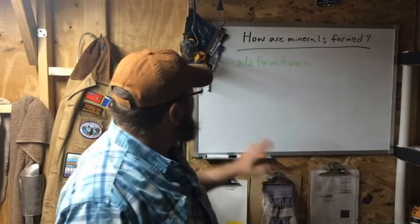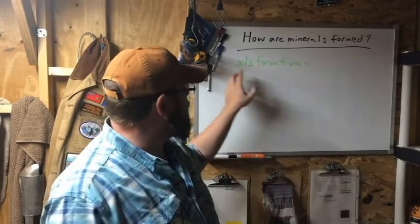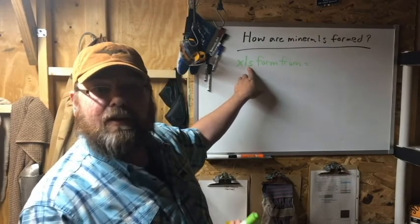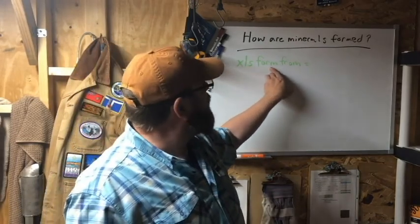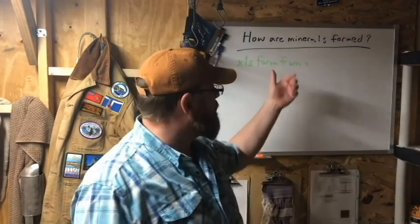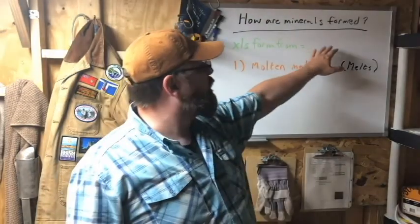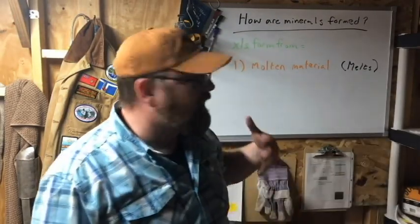There are basically five ways minerals can form. Minerals are made of crystals — 'XLs' is the abbreviation for crystal. Crystals form from one of five different mechanisms, and I'm going to talk about each one at a time. The primary way for crystals to form is from molten material or melts. This is how most igneous rocks form.